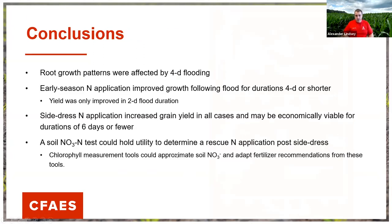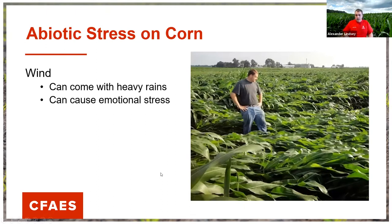In conclusion for the flooding study: root growth patterns were affected by four days of flooding, and early-season nitrogen did improve root growth following durations of four days or shorter. A side-dress nitrogen application increased yield in all cases and may be economically viable if flooding is experienced for six days or less. A soil nitrate-nitrogen test could hold utility in determining a rescue nitrogen application, and we're expanding this trial in 2021 to further hone in on that information.